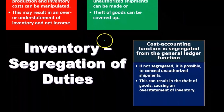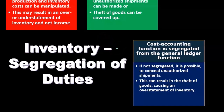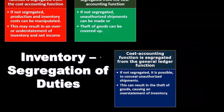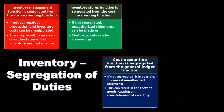The cost accounting function is segregated from the general ledger function. If they are not segregated, it is possible for one person in charge of both to conceal unauthorized shipments.